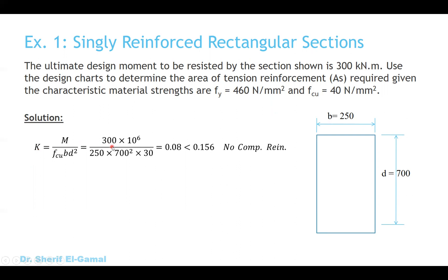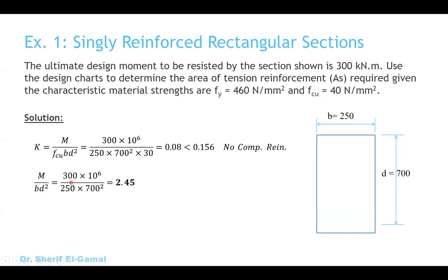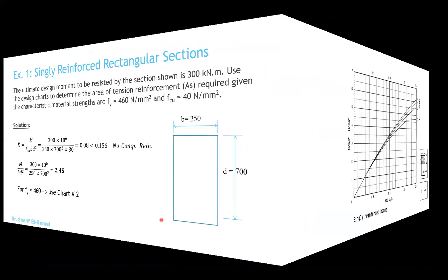M is 300 — multiply by 10⁶ to convert from kilonewton-meter to newton-millimeter — divided by FCU, B, and D squared. The value is 0.08, which is less than 0.156. This means no compression steel is required. We then calculate M over BD squared: 300 × 10⁶ divided by 250 × 700² = 2.45. Since FY yield is 460 and FCU is 40, we use design chart number two. Let's go and see the chart together.